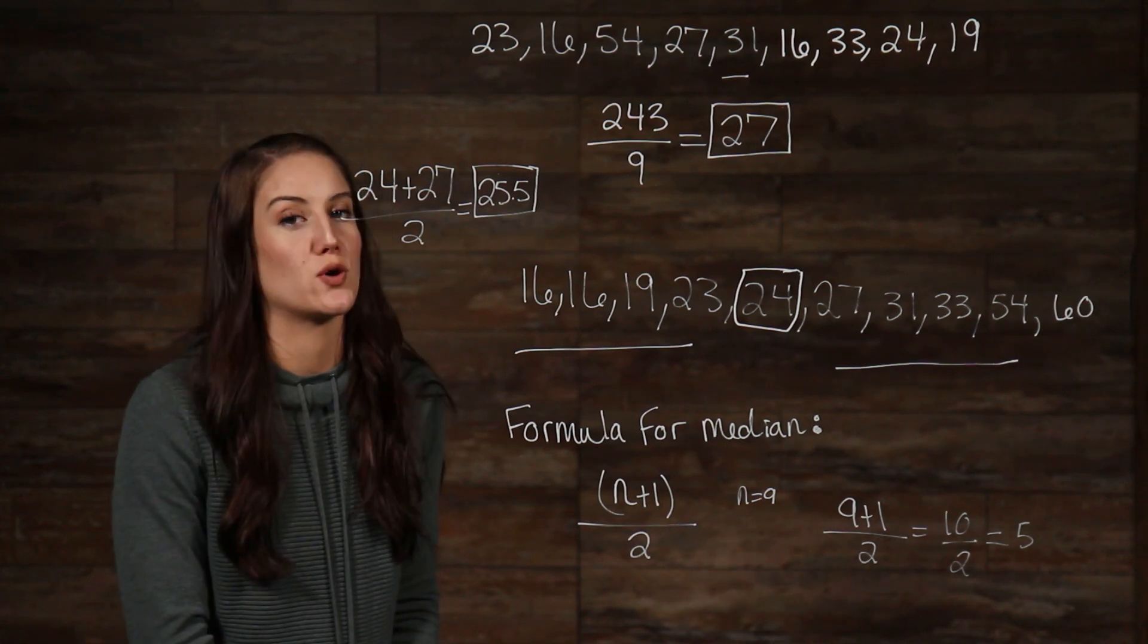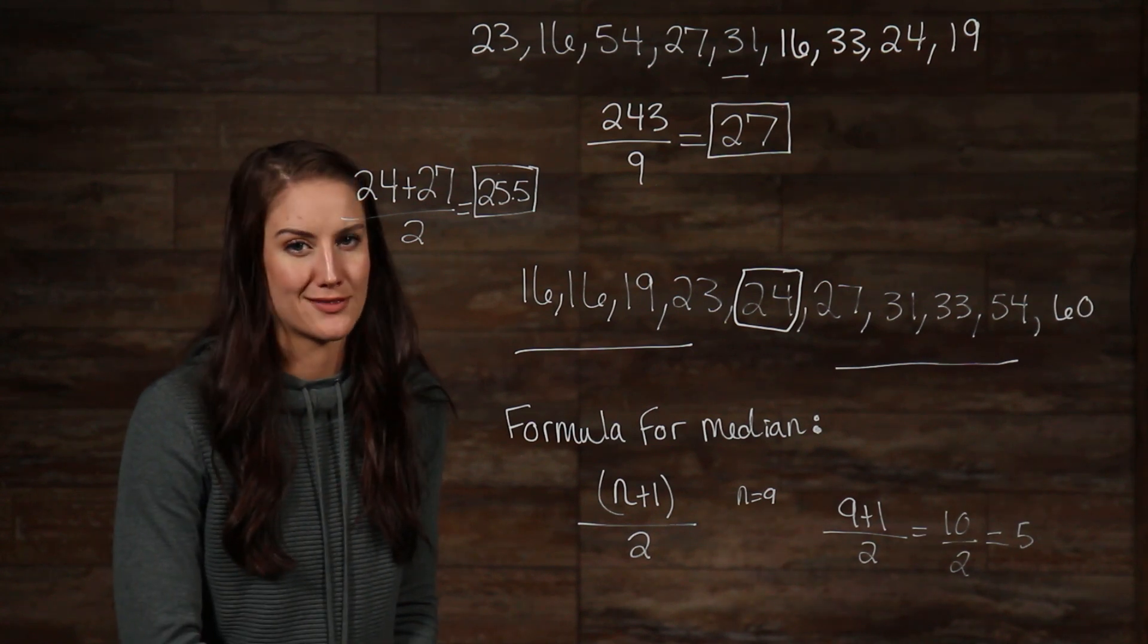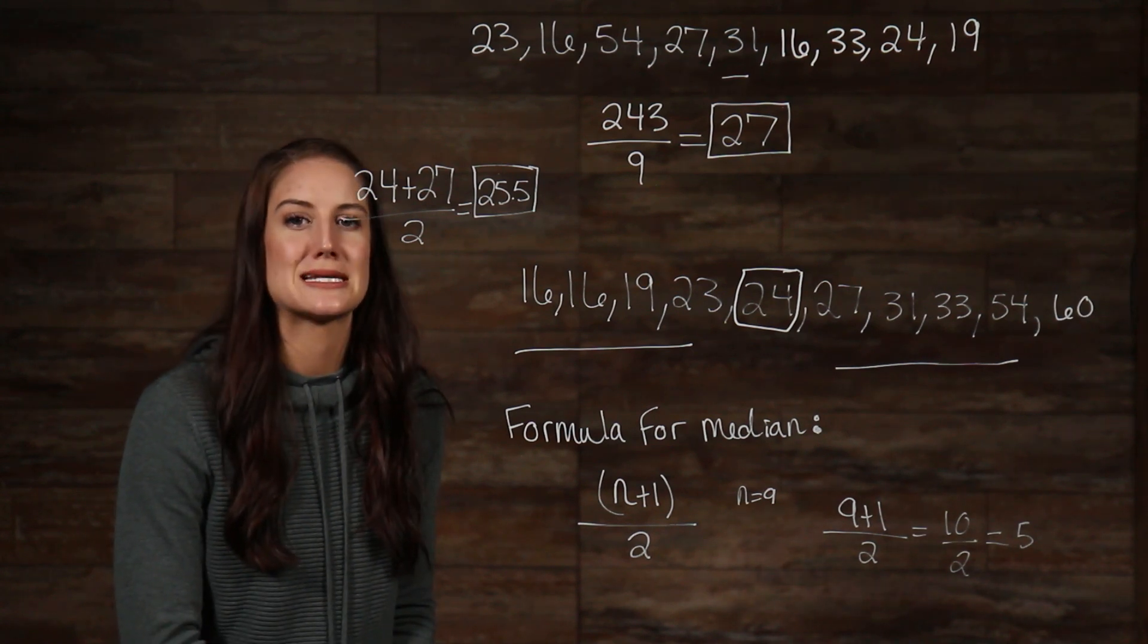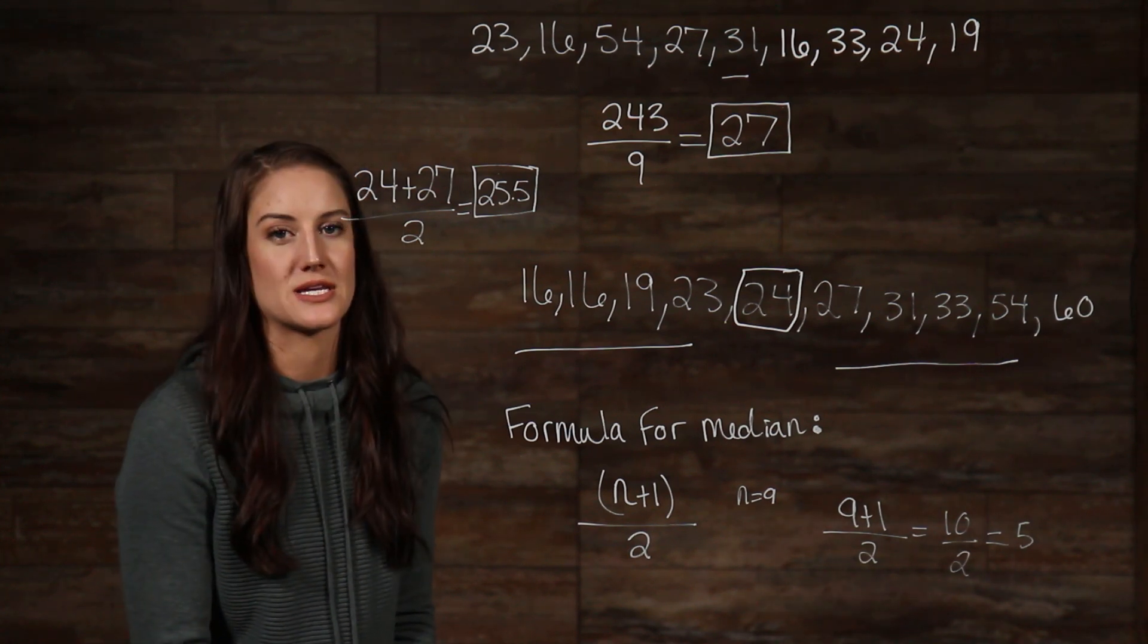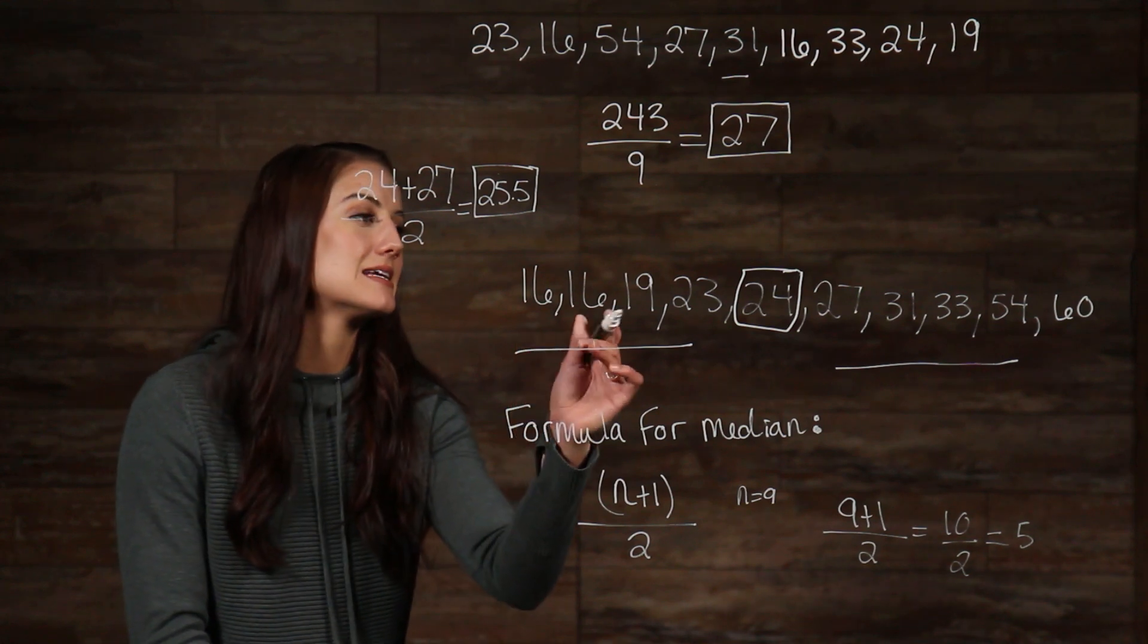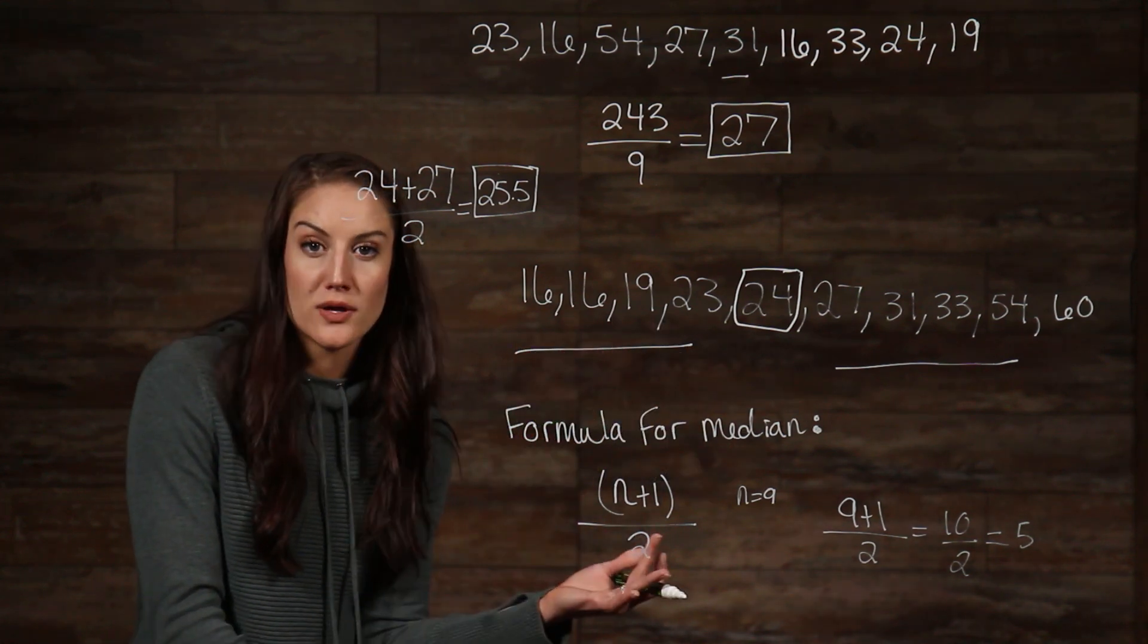Ok, now onto mode. Good news! The mode is definitely the simplest of the three to find. The mode is the number that appears the most amount of times. Taking a look at our list that we've been using, we can see that 16 is the only number that is being repeated. And that is our mode. Simple enough.